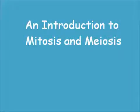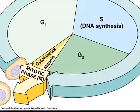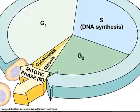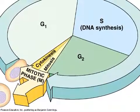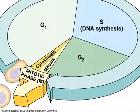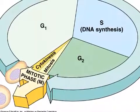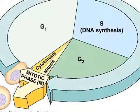An Introduction to Mitosis and Meiosis by John Gallo and Mariela Gratero. The cell cycle describes a sequence of events that occurs during the life of most eukaryotic cells.